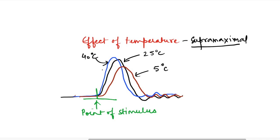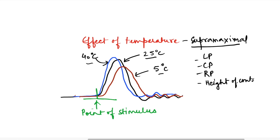We compare the simple muscle twitches obtained at warm and cold temperatures with respect to the graph at room temperature, looking at the effect on latent period, contraction period, relaxation period, and the strength of contraction. The latent period — the time from the point of stimulation to the start of contraction — has decreased in warmer temperature and increased in colder temperature.